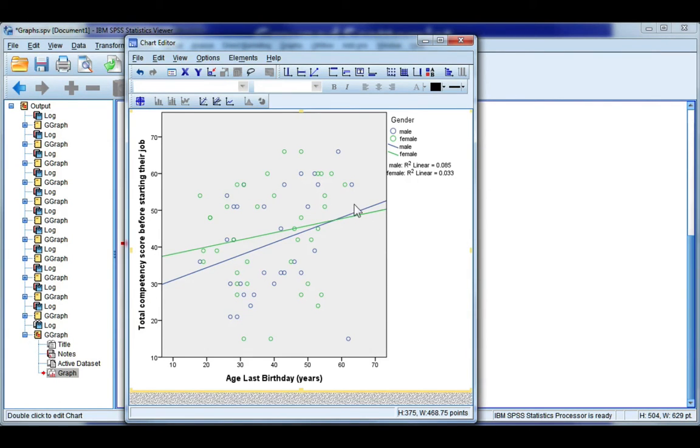But be very careful about putting in trend lines. You really should only do it if you're doing regression. And also consider if there are any outliers, such as these three points here, that might be throwing off the slope of your line.